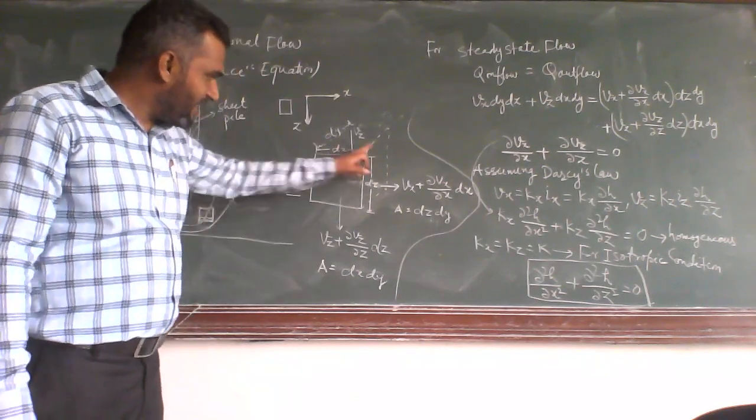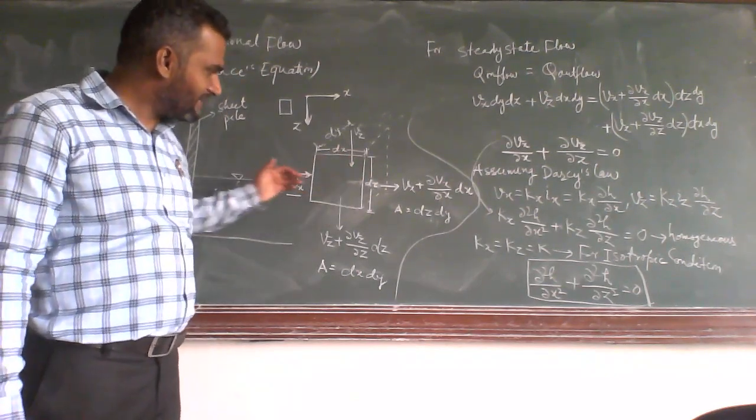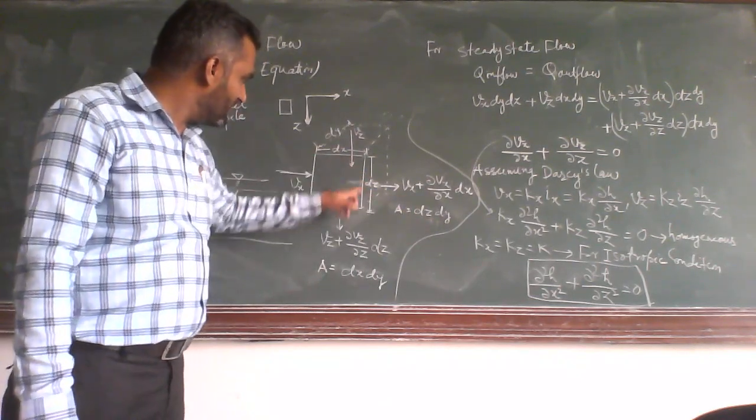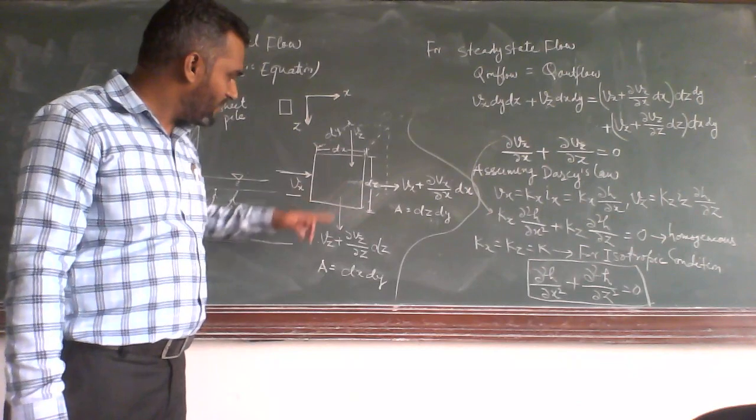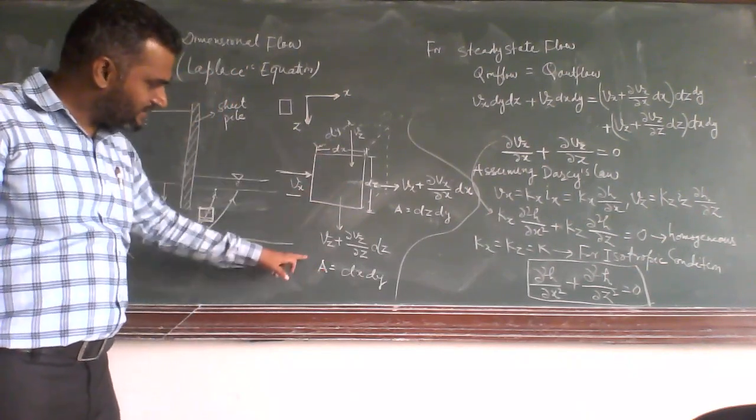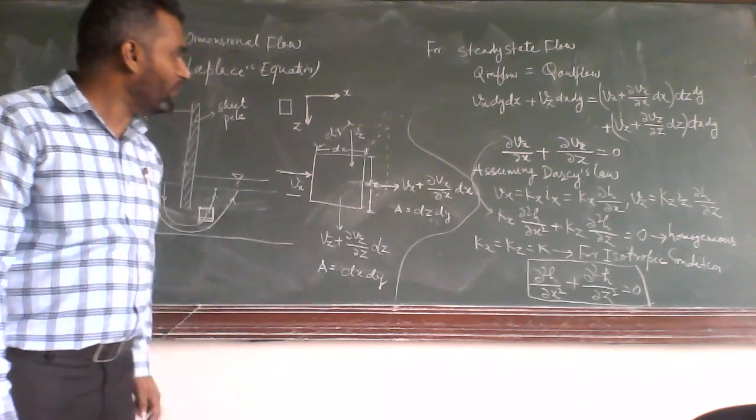And the cross-sectional area in case of x axis, that will be dz into dy. And for cross-sectional area for z direction, that will be dx into dy.